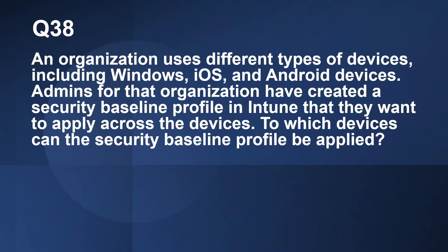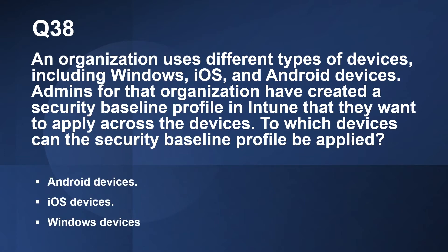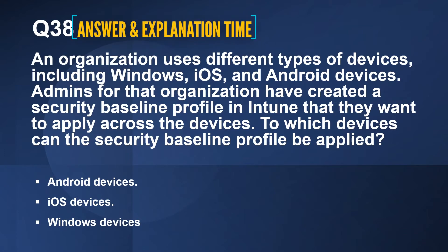Question number 38: An organization uses different types of devices including Windows, iOS, and Android. Admins have created a security baseline profile in Intune that they want to apply across the devices. To which devices can the security baseline profile be applied? Options are: Android devices, iOS devices, Windows devices. The correct answer is Windows devices. Security baseline settings are used only on devices running Windows 10 version 1809 or later.